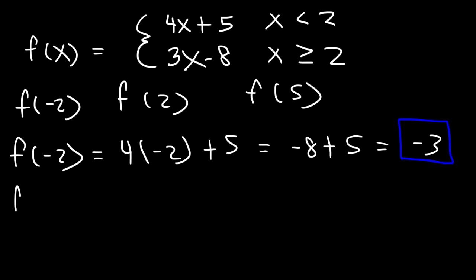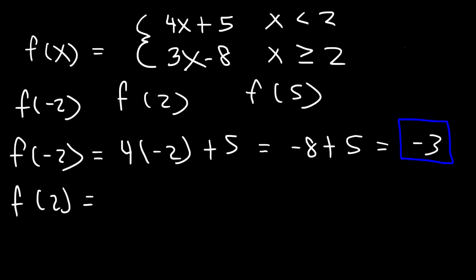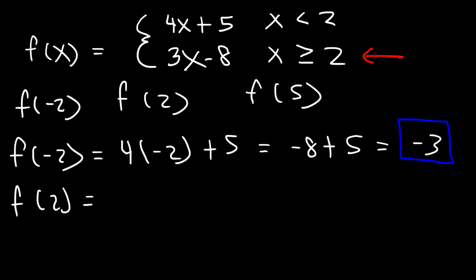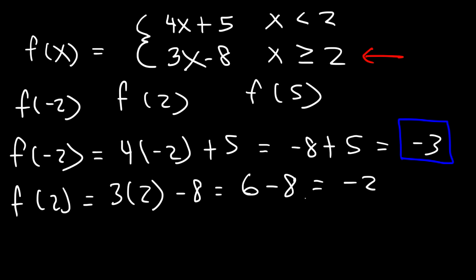Now, what about f of positive 2? Should we use 4x plus 5 or 3x minus 8? x equals 2 satisfies the condition x is equal to or greater than 2, not the first condition. So we have to use 3x minus 8. That's 3 times 2 minus 8. 3 times 2 is 6, and 6 minus 8 is negative 2. And that's the answer.